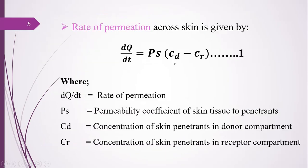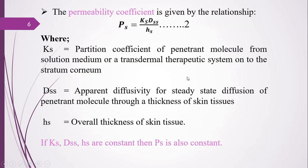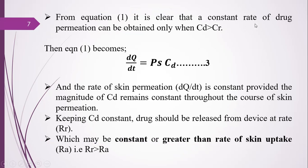From equation 1 — Ps × (Cd − Cr) — it is clear that a constant rate of drug permeation can be obtained only when Cd is greater than Cr. Cd is the concentration of drug in the donor compartment and Cr is the concentration of drug in the receptor compartment. The donor compartment is the drug delivery system and the receptor compartment is the systemic circulation. Then equation 1 can be written as dq/dt = Ps·Cd, and the rate of skin permeation dq/dt is constant provided Cd remains constant throughout the course of skin permeation.